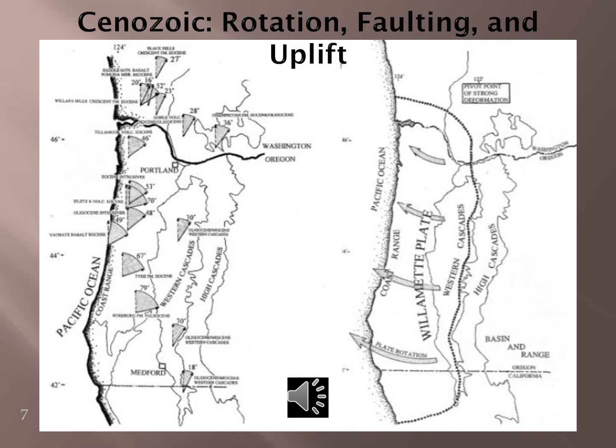The coast range was uplifted by the oblique collision of the Juan de Fuca Plate with North America, which also yielded moderate rotation and faulting. The coast range block rotated clockwise with the stretching and widening in the Basin and Range and from compression of rocks in southwest Washington. Magnetometer readings show that the coast range has rotated 51 degrees since Eocene, averaging 1.5 degrees per million years. The clockwise rotation was generated by oblique plate subduction, extension, and dextral shear, with dextral shear accounting for 40% of the movement and extension for 60%.